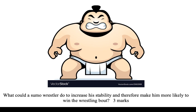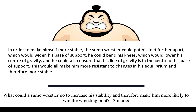Sumo wrestling is a sport that sometimes comes up in terms of balance and stability. What could a sumo wrestler do to increase his stability and therefore make him more likely to win that wrestling bout? Focus on BLC. Here's an example of a three-mark answer: we cover base of support by putting his feet wider apart, which increases his base of support. We've also bent his knees, which lowers his centre of gravity and makes him more stable. We've also ensured his line of gravity is right through the centre of that base of support. All these things make him more resistant to changes in his equilibrium, therefore he's more stable and less likely to be pushed over.